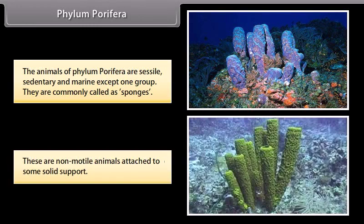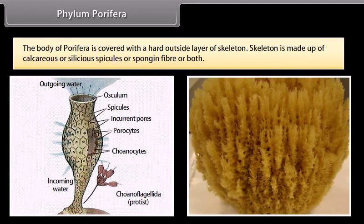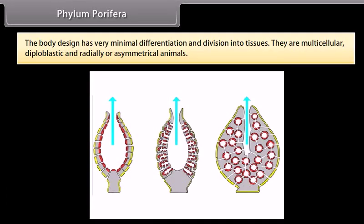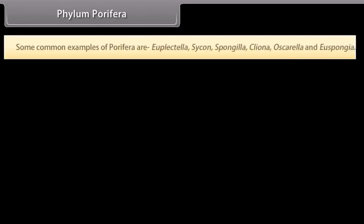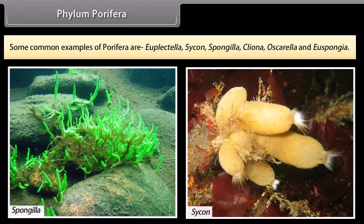These are non-motile animals attached to some solid support. The body of Porifera is covered with a hard outside layer of skeleton, made up of calcareous or siliceous spicules or sponge fiber or both. The body design has very minimal differentiation and division into tissues. They are multicellular, diploblastic, and radially or asymmetrical animals. Some common examples of Porifera are Euplectella, Sycon, Spongilla, Cliona, Oscarella, and Euspongia.